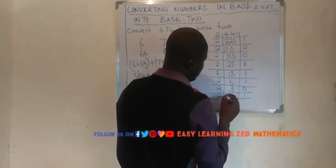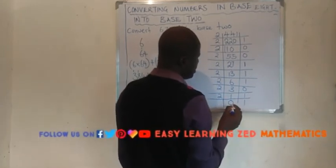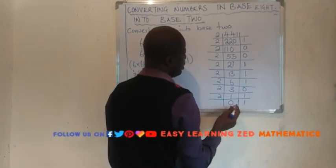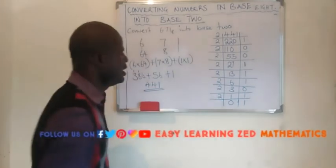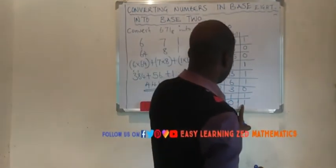Then 1 divided by 2 will give us 0 remainder 1. Now, since I've got a quotient which is 0 here, that means my calculation has ended. Now, it's time for us to write these remainders.